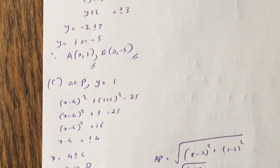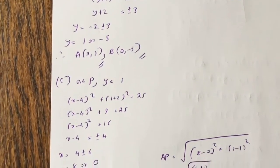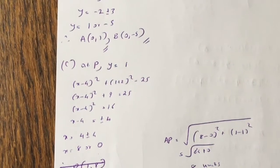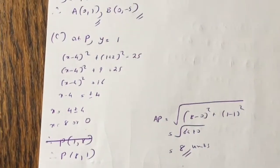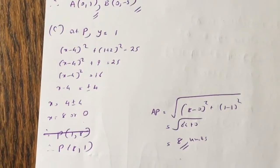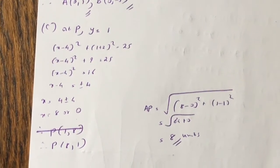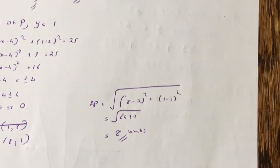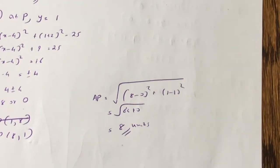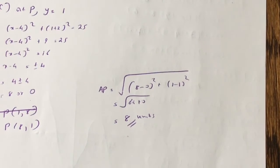And part c, at p, y is equal to 1, and you get x equals to 8 or 0. So once you've got that, you know your point p is 8, 1, because 0, 1 is the point a. So a, p is square root of 8 minus 0 squared plus 1 minus 1, 0. Basically, it's 8 units. So that's question 2.